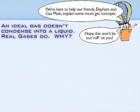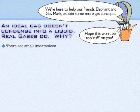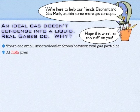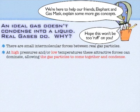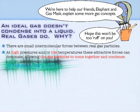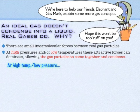We talked before about how no real gas is actually ideal, and that's because real gases have intermolecular forces. Even if it's just a London dispersion force, every real gas has an intermolecular force, and those intermolecular forces are going to help snag gases and bring them together. Real gases can be forced to condense if we can either increase the pressure or lower the temperature, and that's going to allow the intermolecular forces to dominate.